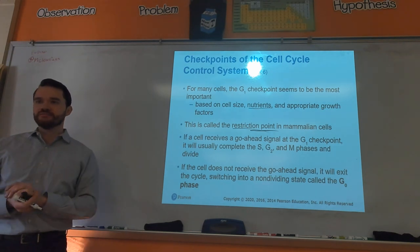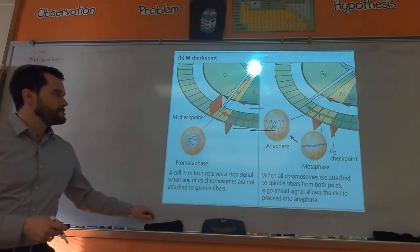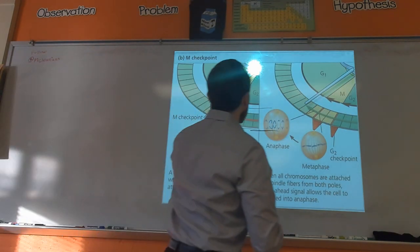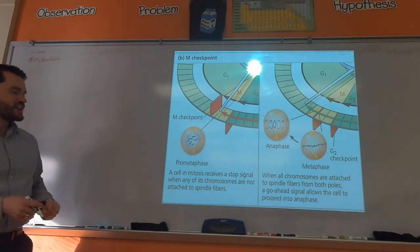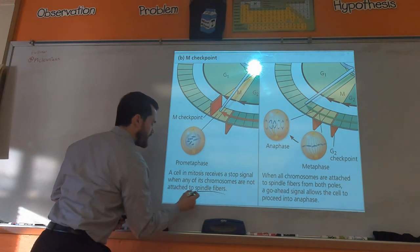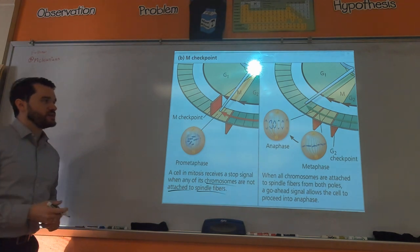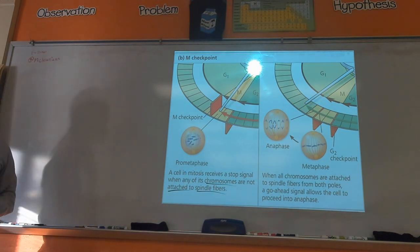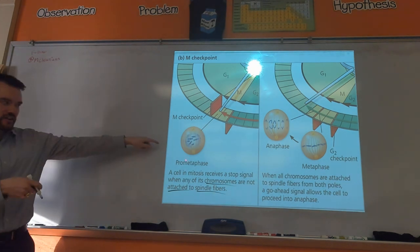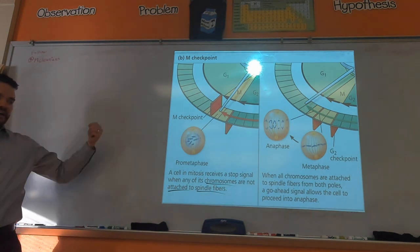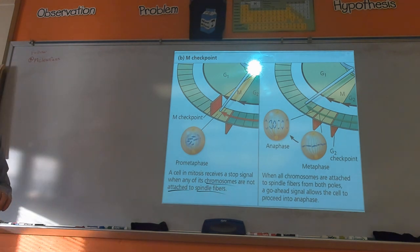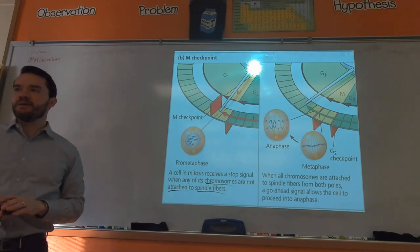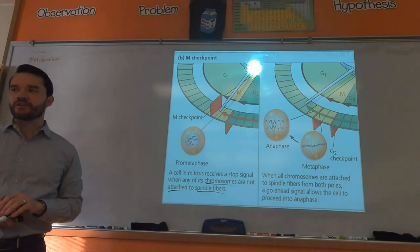The M checkpoint is all about spindle fibers — making sure chromosomes are attached, then pulling them apart. The G2 checkpoint checks the DNA to make sure it was synthesized correctly during S phase.